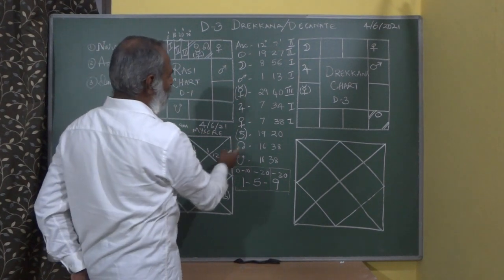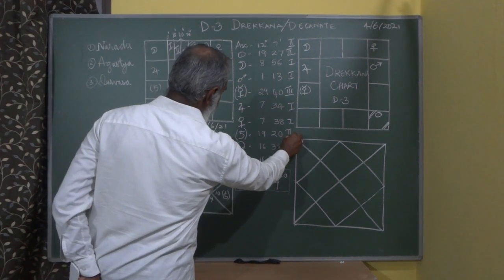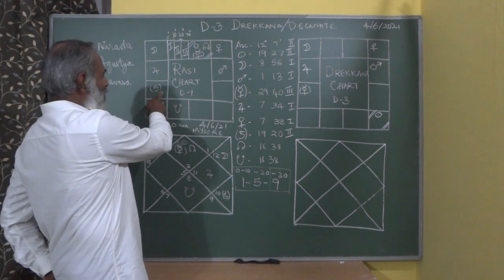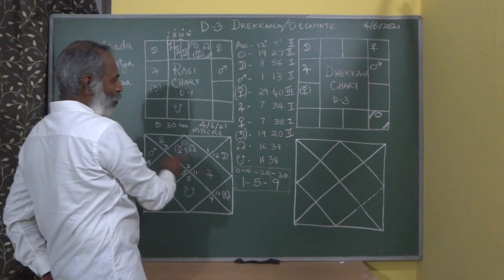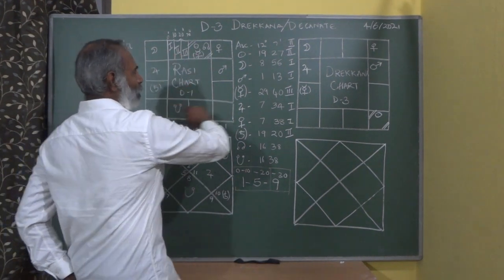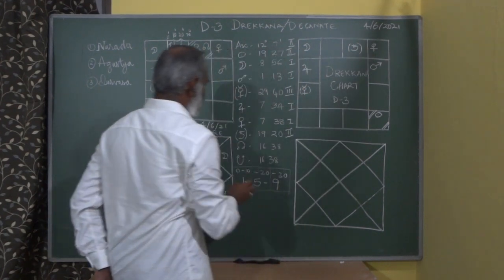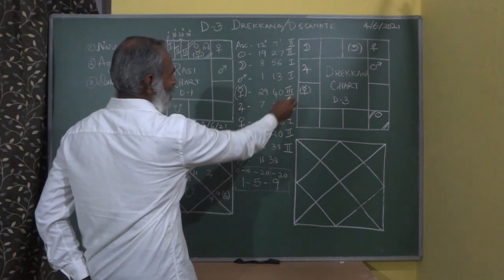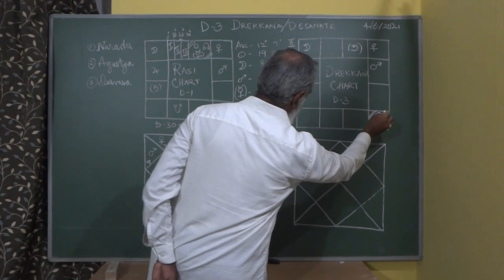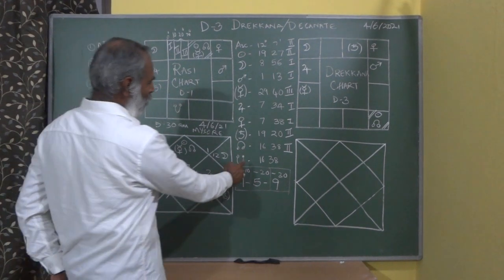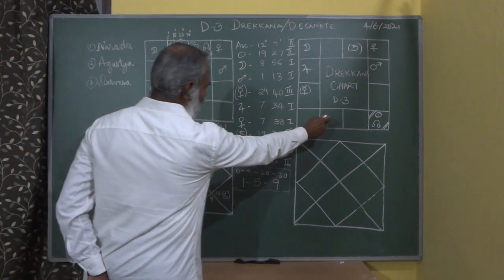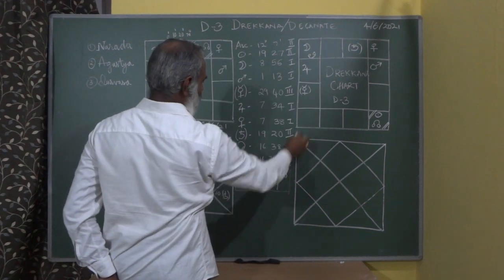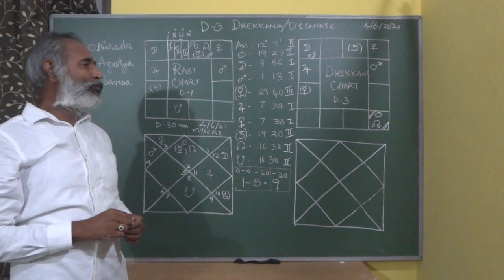Jupiter is at 7 degrees 34 minutes in the first Drakana of Aquarius, so it remains in Aquarius. Venus is also in the first Drakana of Mithuna (Gemini), so it stays there. Saturn retrograde at 19 degrees 20 minutes is in the second Drakana of Capricorn, so it moves five signs: 1, 2, 3, 4, 5 to Vrishabha (Taurus). Rahu in the second Drakana of Taurus moves five houses to Virgo with the Sun. Ketu in the second Drakana of Scorpio goes 1, 2, 3, 4, 5 to Pisces.